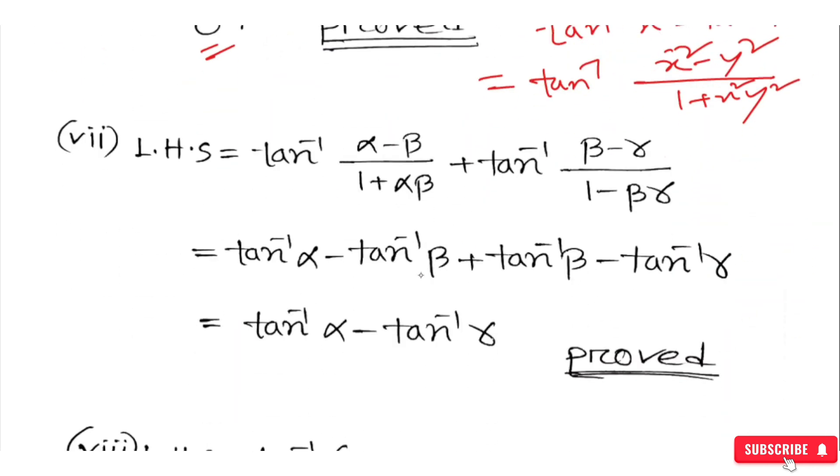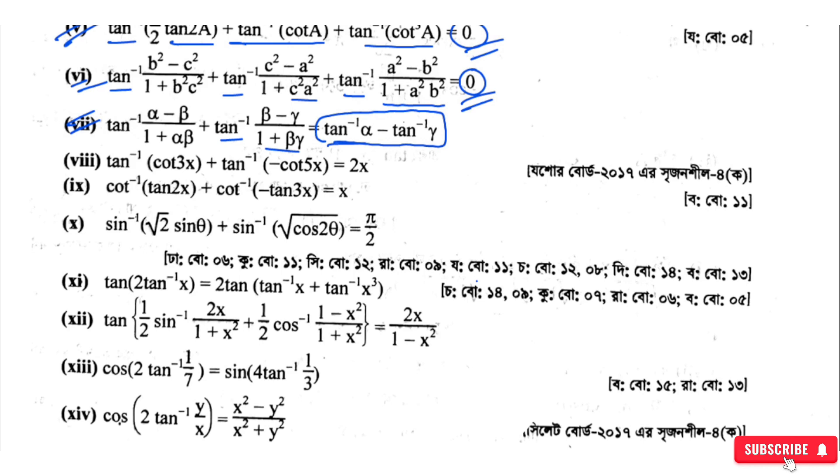The left-hand side becomes tan⁻¹(α) minus tan⁻¹(β) plus tan⁻¹(β) minus tan⁻¹(γ) plus tan⁻¹(γ) minus tan⁻¹(α), which equals zero. Proved.